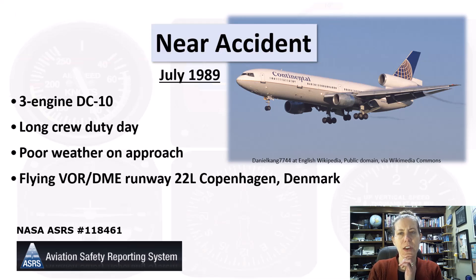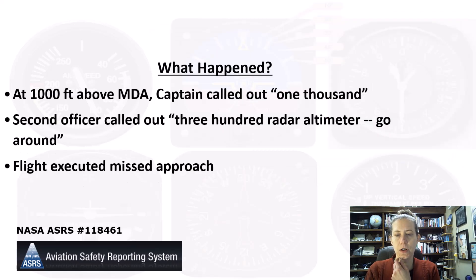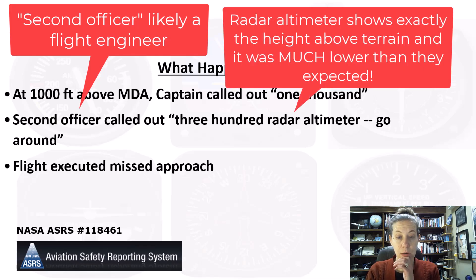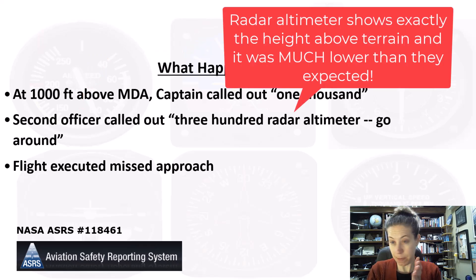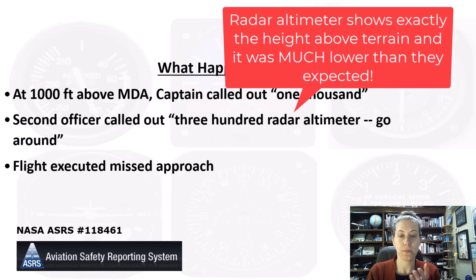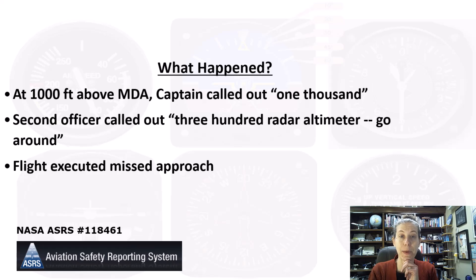As they neared their minimum descent altitude, the captain called out 1,000 feet. The second officer — a flight engineer on this aircraft — called out '300 radar altimeter' and called for a go-around. The captain listened, executed the go-around, and did a missed approach. They were puzzled: why did the radar altimeter show only 300 feet if they were still 1,000 feet above the minimum descent altitude? Thankfully the second officer called it out because something was wrong — but how did that even happen?